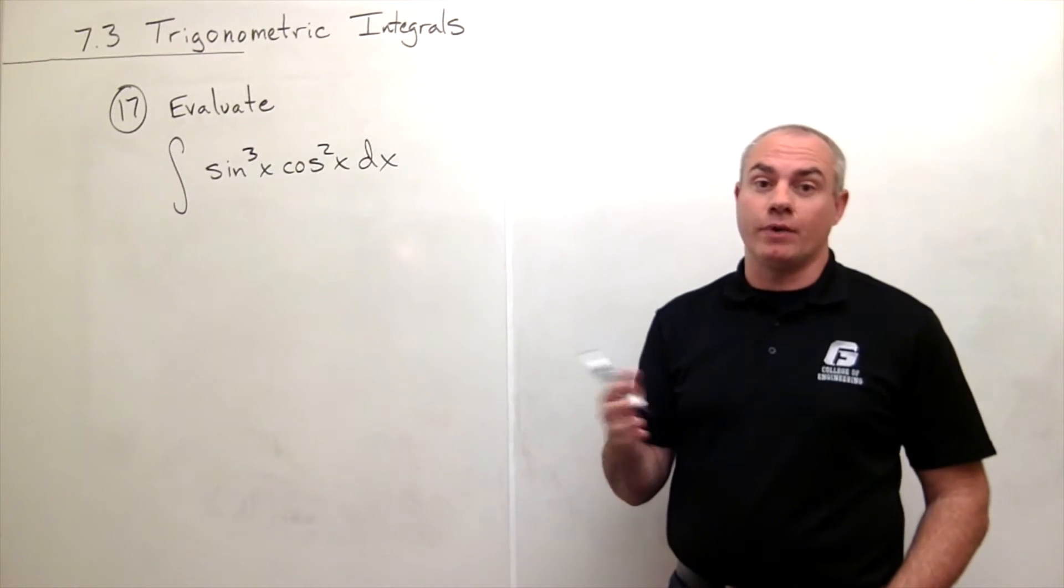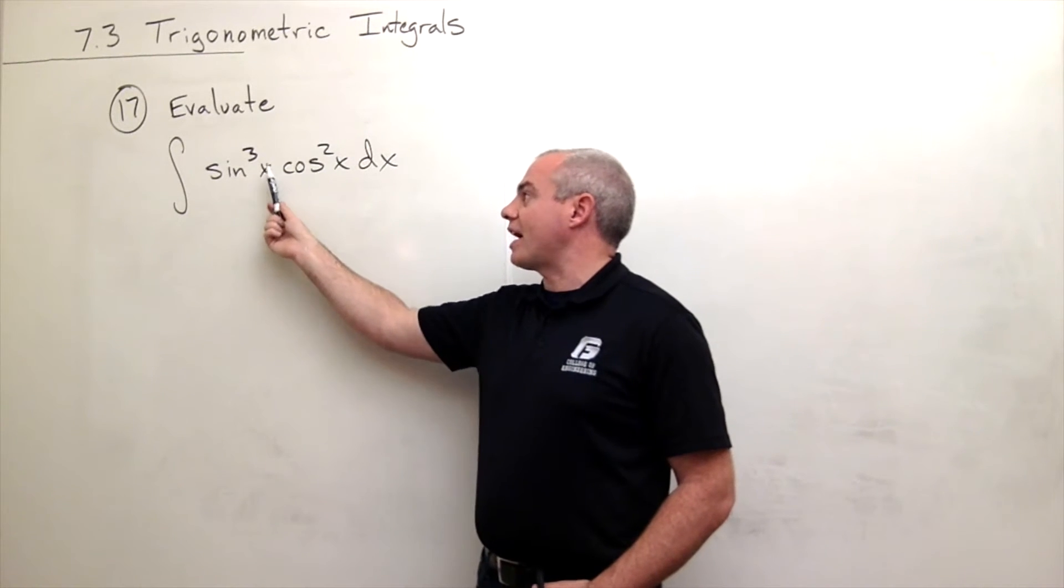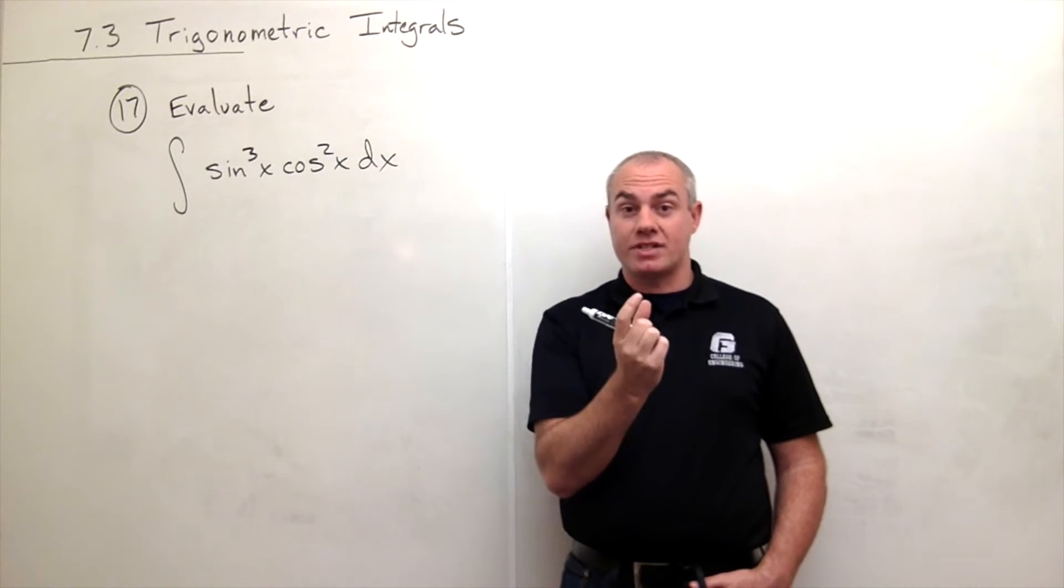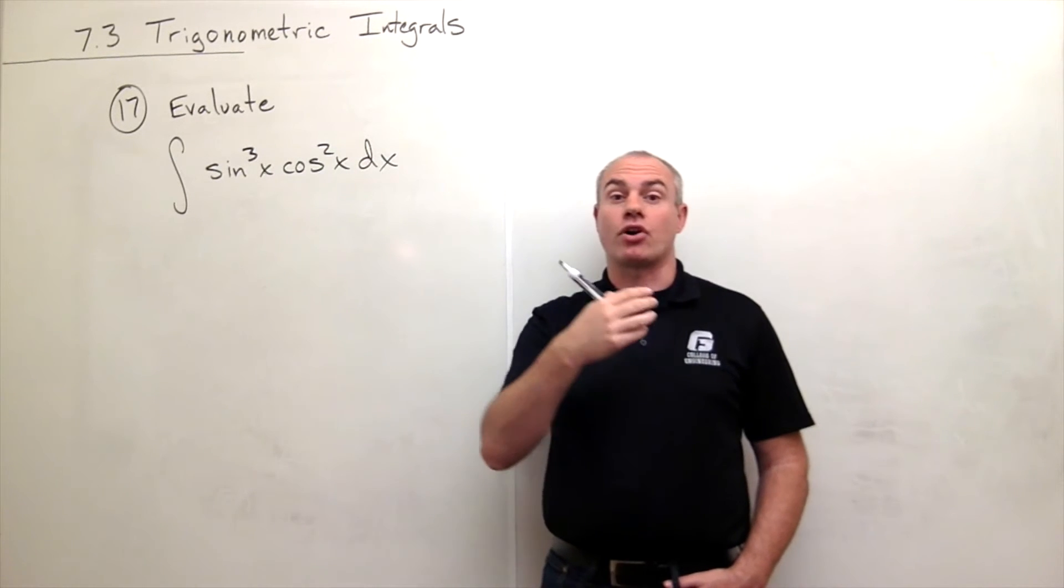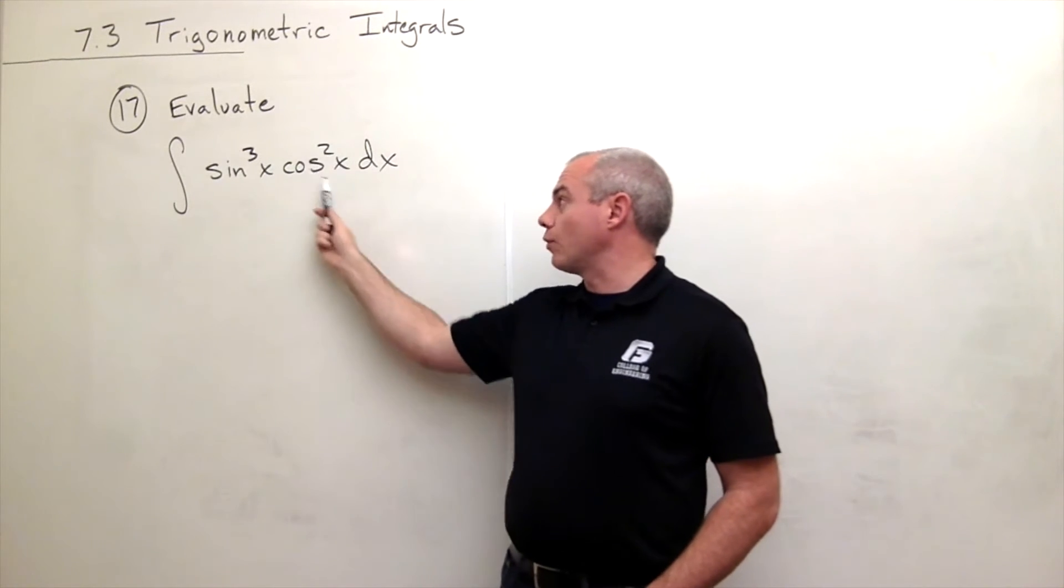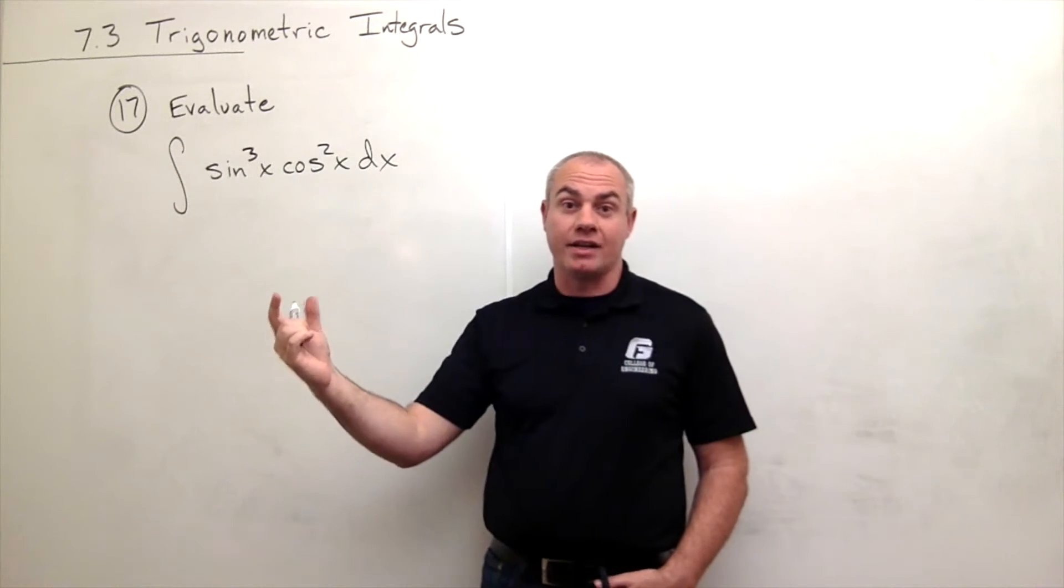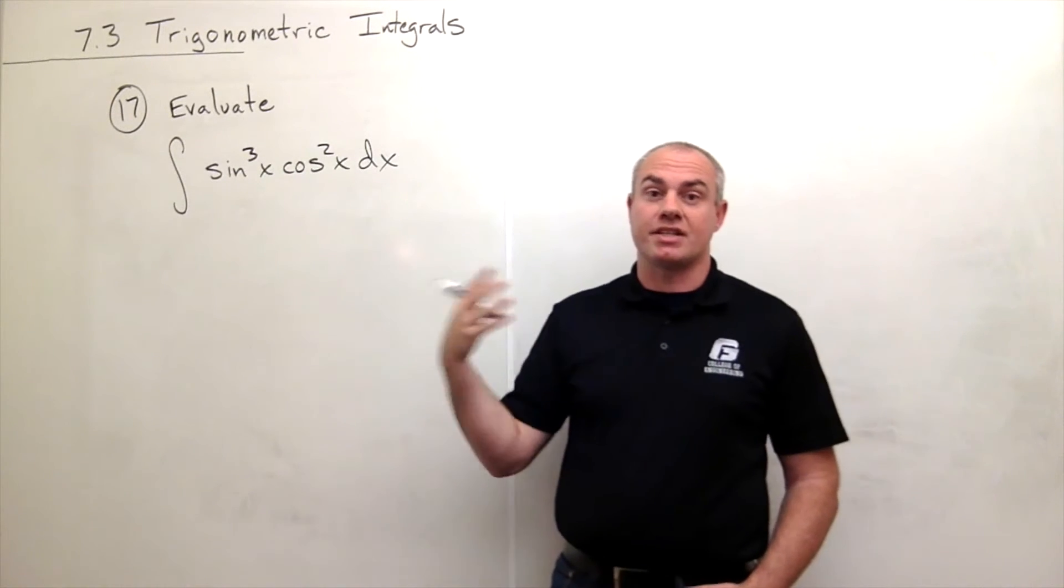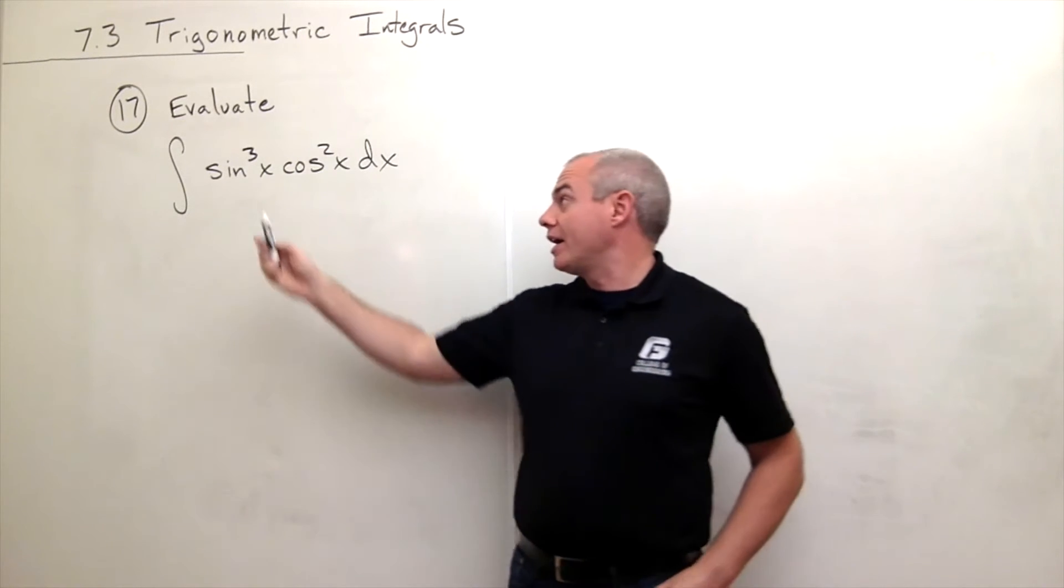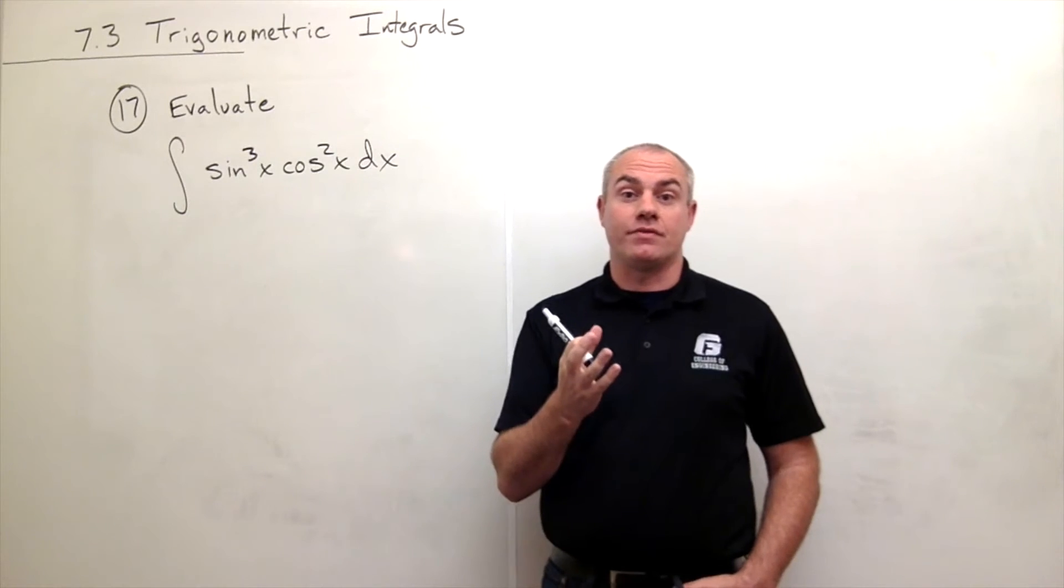If everything is even we have to use the half angle identities, but in this case we have a sine of x cubed. So if it's cubed I can break one of those sines off and then turn all of those other sines into cosines. Now if cosine were the one that were to the odd power I'd break off one cosine and turn all the other cosines into sines. But as long as one of the two has an exponent that is odd then we can break one off and use this little trick.